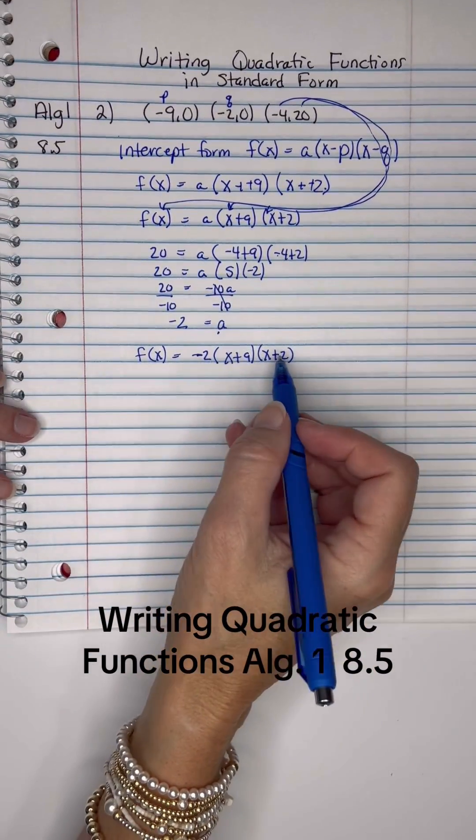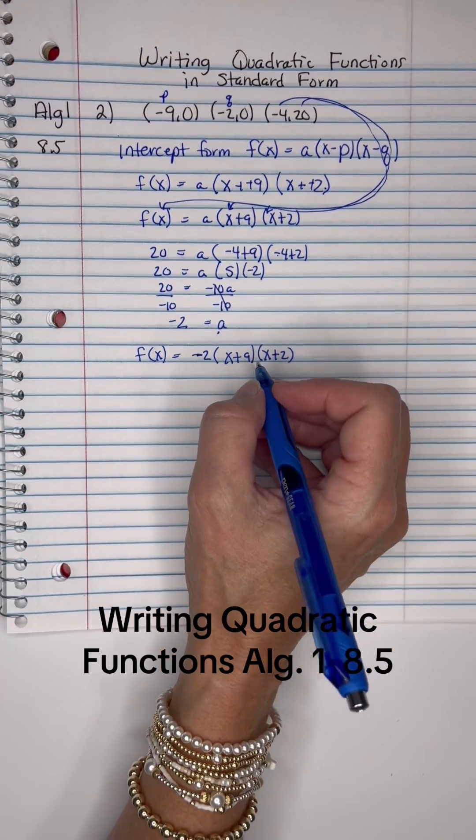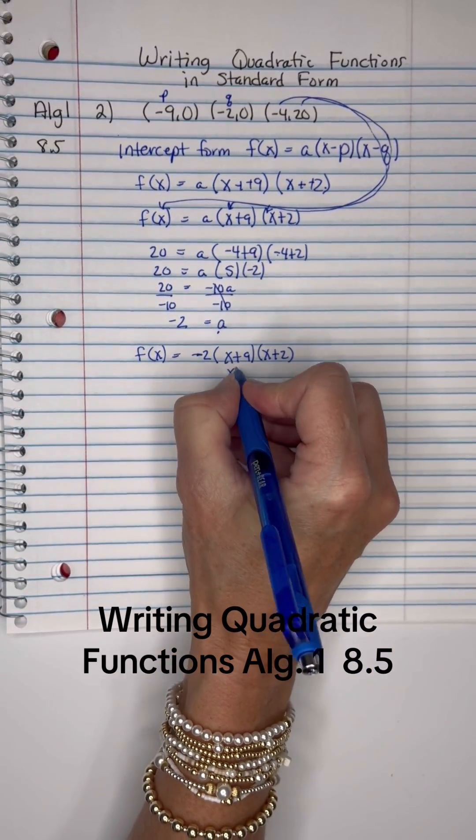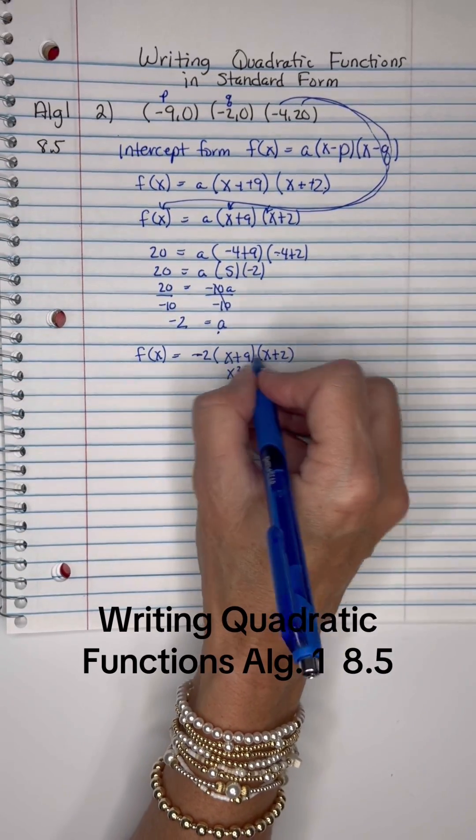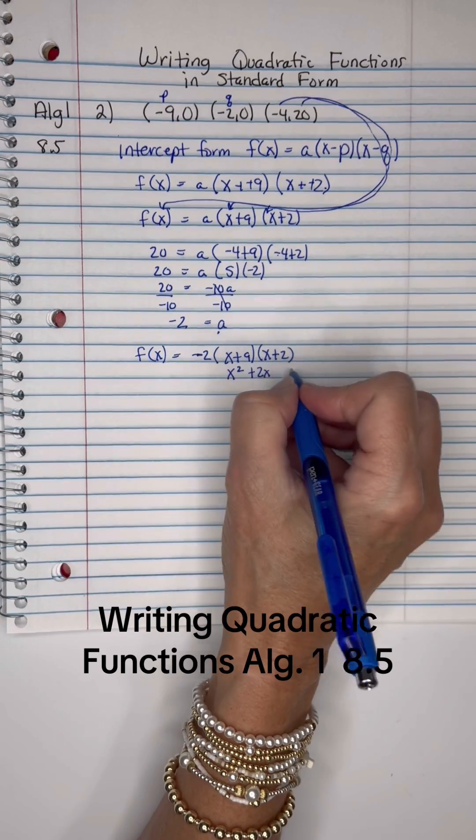Then we need to FOIL this back together and then distribute the negative 2. X times x is x squared. The outside terms, x times 2 is 2x.